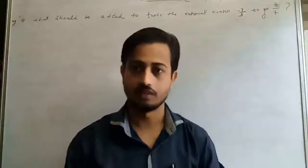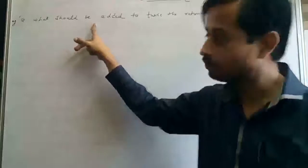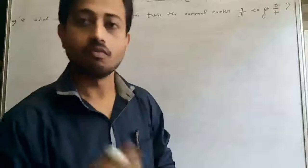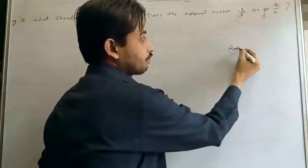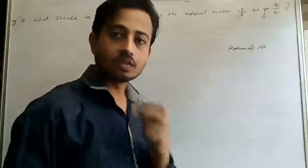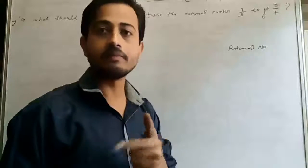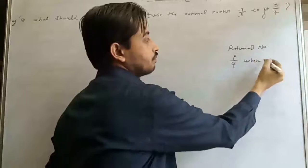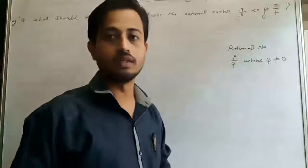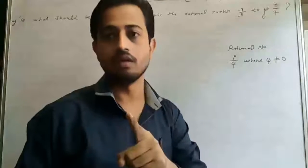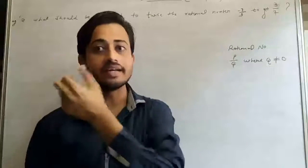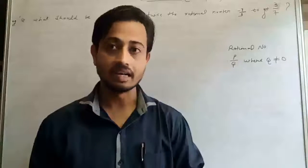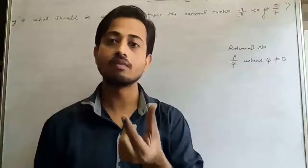Let's come to our first question. The first question is: what should be added to twice the rational number? Everyone should know about rational numbers. Rational numbers are those numbers which can be written in terms of P by Q, where Q never equals 0 — because if we divide any number by 0, we get an undefined result.